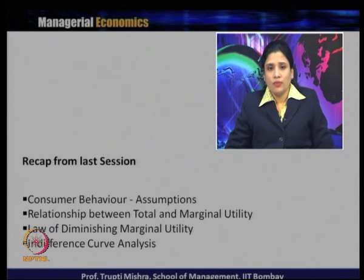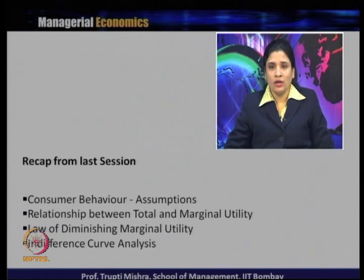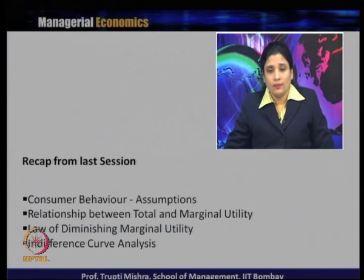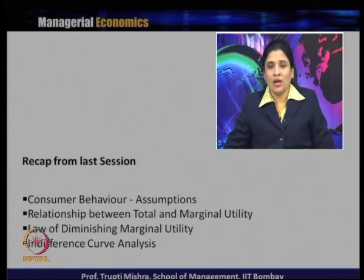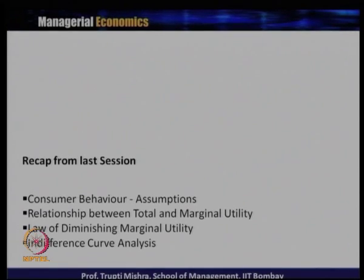We introduced the concept of the law of diminishing marginal utility, which tells us that when a consumer goes on consuming a product, after a certain point the marginal utility diminishes, sometimes reaches zero, and sometimes becomes negative. Then we introduced indifference curve analysis, which is part of ordinal utility analysis, and discussed the different properties of indifference curves, the marginal rate of substitution, and different kinds of indifference curves for complementary and substitute goods.